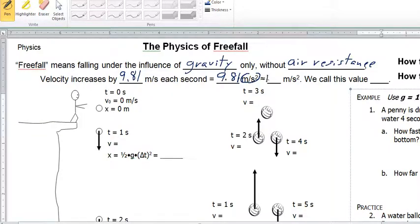We often round this to 10 if we're doing just approximate calculations. And we call this value G for gravitational acceleration.